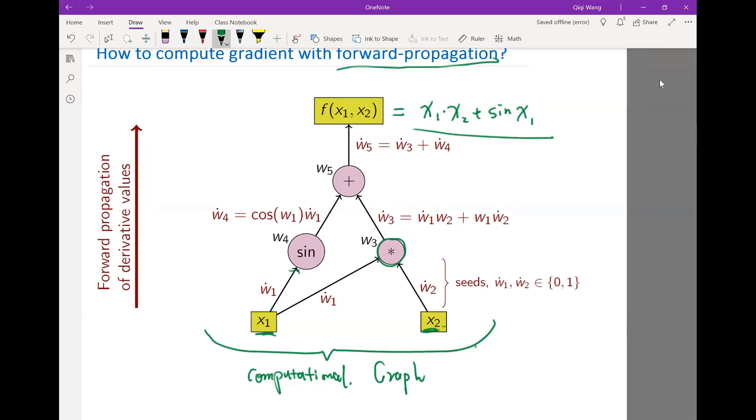First of all, you have this multiplication operator that multiplies x1 with x2 and you produce the product of x1 and x2. On the other hand, you also compute the sine of x1. So every edge is really a quantity, an intermediate quantity. At the final stage you add the output of the product and the output of the sine and that gives you the final objective function. That's what the computational graph is.